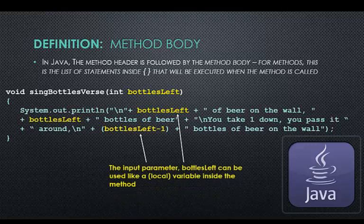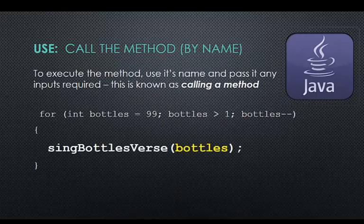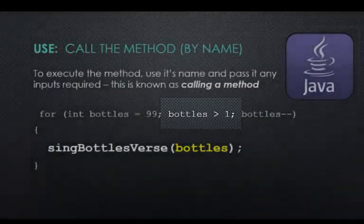The input parameter, bottles left, can be used like a local variable inside the method. Once the method has been properly defined, it is available for use. In our program, it is actually used 98 times, a good example of reusing instead of retyping code. Since this is a void method, it stands alone as a program statement. We call it by name, pass in the input argument bottles, and it will execute its statements. After finishing, Java comes back to the main method. We have reached the end of the for loops code, so bottles is decremented by 1. Next, Java checks. Is the bottles value still greater than 1? Yes. So we repeat the call to the Sing Bottles Verse, and we will repeat this over and over again, until bottles has a value of 1.